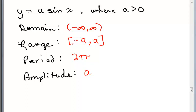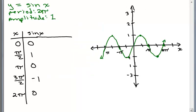So now we're going to work a problem where A is less than zero. Remember we always want to remember this basic chart for Y equals sine of X. The period is 2 pi. The amplitude is 1. And the range is between negative 1 and 1.